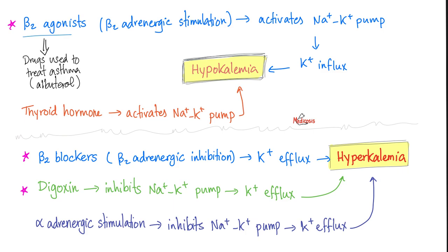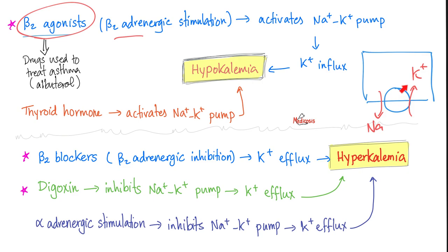Beta-2 agonists stimulate the sodium-potassium pump. The pump pushes sodium to the outside and potassium to the inside. So if I'm taking a beta-agonist, I am stimulating my sodium-potassium ATPase pump, which pushes more potassium into the cell and leaves less potassium in the blood — hypokalemia. This fact can be exploited: use beta-2 agonists to treat hyperkalemia, because they cause hypokalemia.